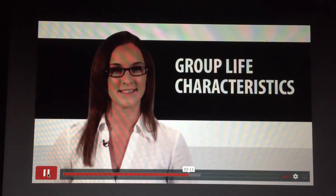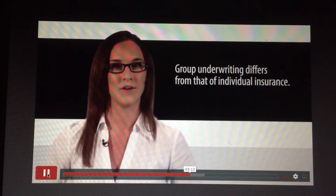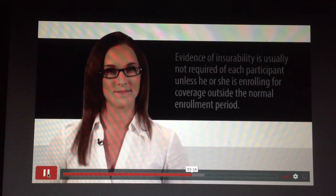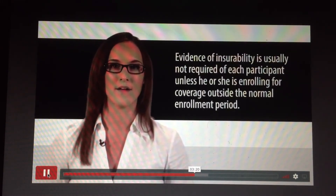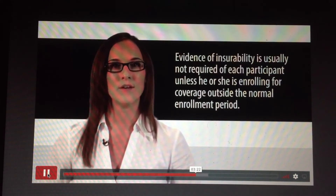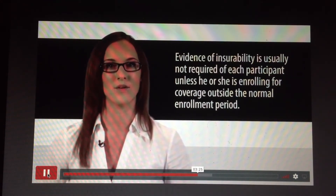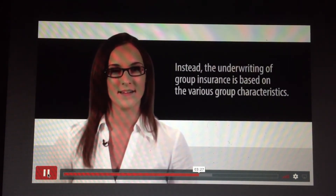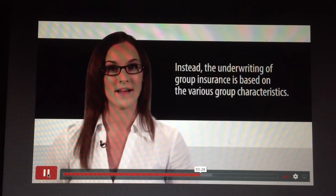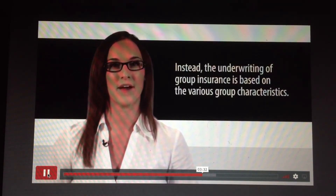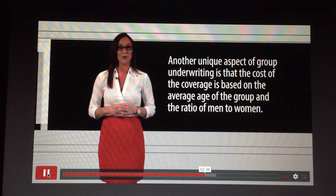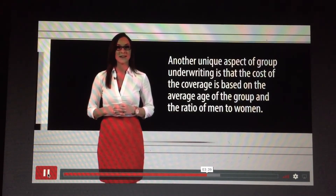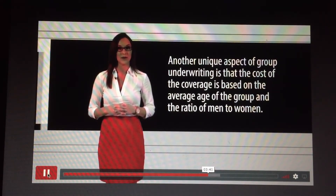Group life characteristics: group underwriting differs from that of individual insurance. Evidence of insurability is usually not required of each participant unless he or she is enrolling for coverage outside the normal enrollment period. Instead, the underwriting of group insurance is based on various group characteristics. Another unique aspect of group underwriting is that the cost of coverage is based on the average age of the group and the ratio of men to women.